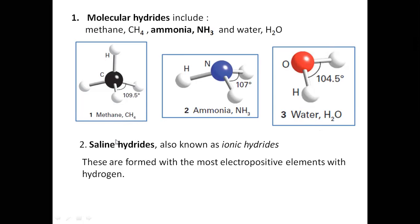Another category is saline hydrides, also called ionic hydrides. These are formed between the most electropositive element and hydrogen — that is a very important point. Saline hydrides are binary compounds of hydrogen in which one component is hydrogen and the other partner is the most electropositive element. Most electropositive element — remember this point.